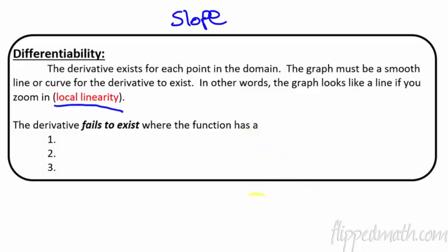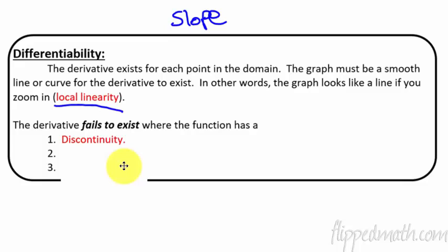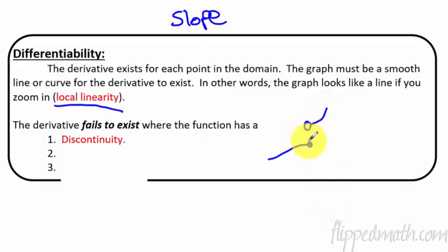There are times when a derivative does not exist — when the derivative fails to exist. The first place it happens is on a discontinuity. So if the graph just doesn't exist, whether it's a jump, a hole, a vertical asymptote, anything like that — if the graph stops, then obviously you can't take the derivative of a point right there when there's no graph and it doesn't exist.